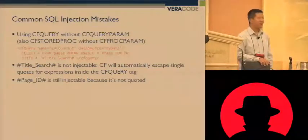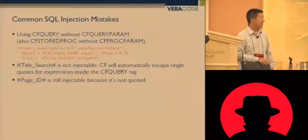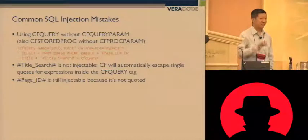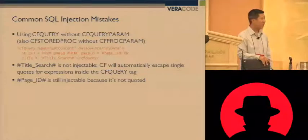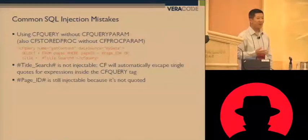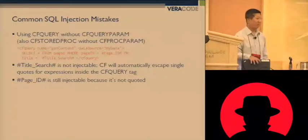Title search is actually not injectable. ColdFusion, if you're inside a CF query tag and you use any ColdFusion expression — the thing in the hash marks — it's going to automatically escape any of the single quotes in those expressions. When you're looking at the Java, you'll see escape single quotes around the variable expression, and the developer doesn't have to do anything to make that happen. It just happens. So there's not any way that I'm aware of right now to escape out of those single quotes because of that function being called.